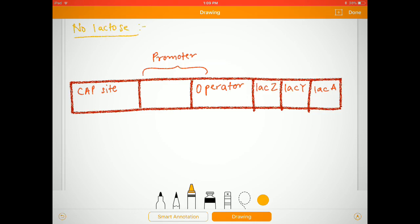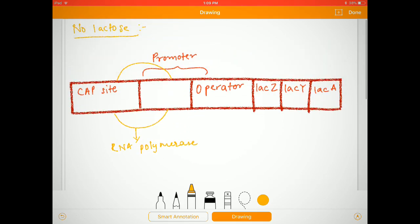So this is the RNA polymerase which will go and bind to the promoter region. But as we all can see, there is a repressor molecule which is attached to the operator region.